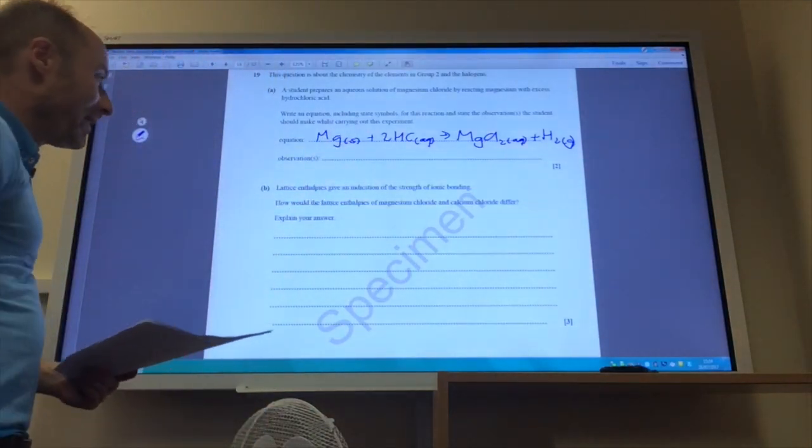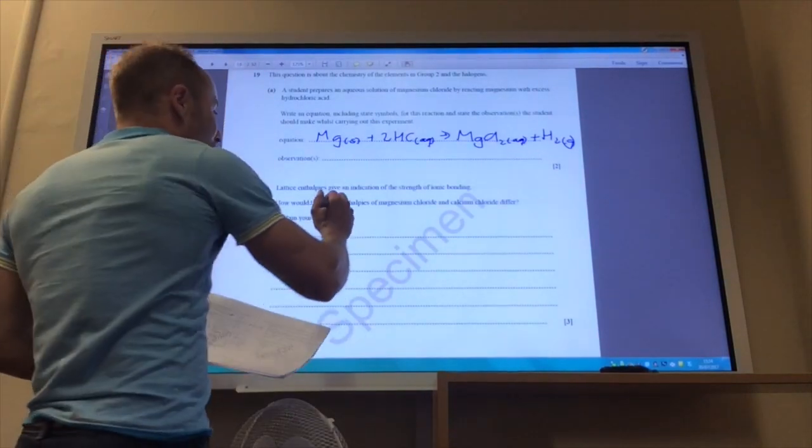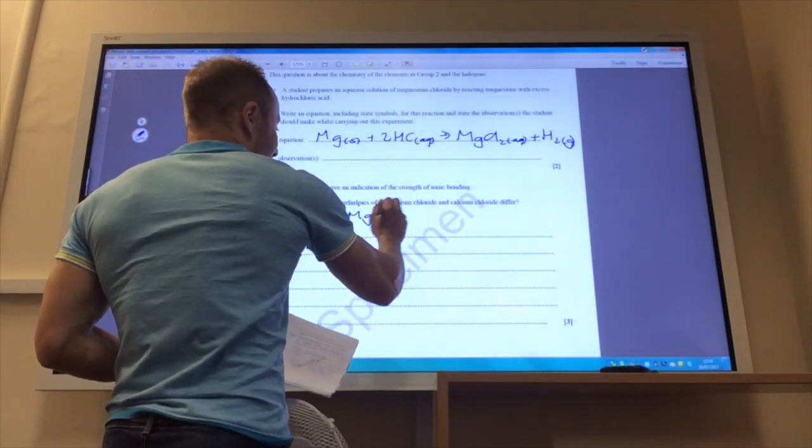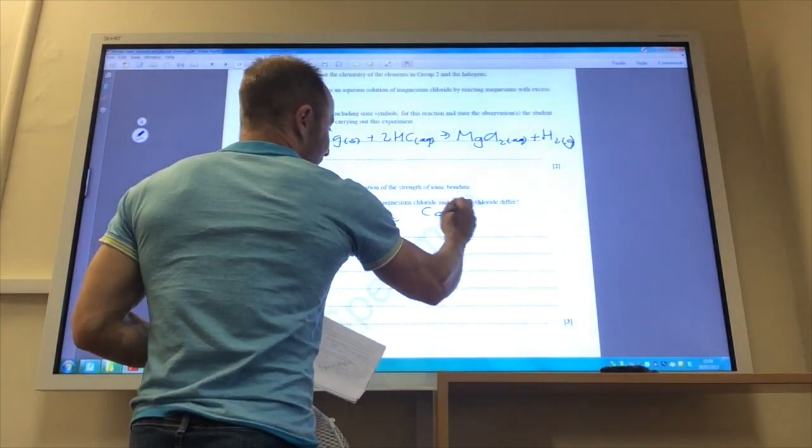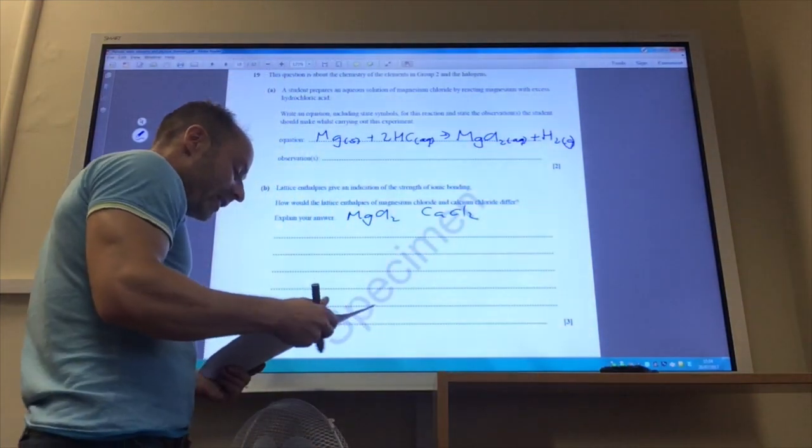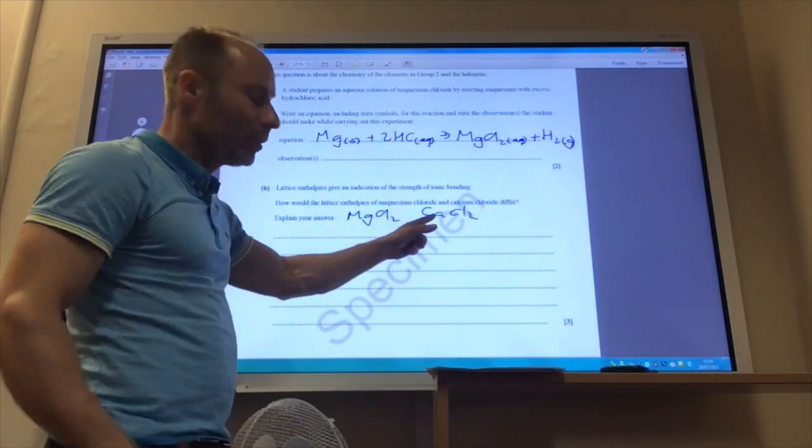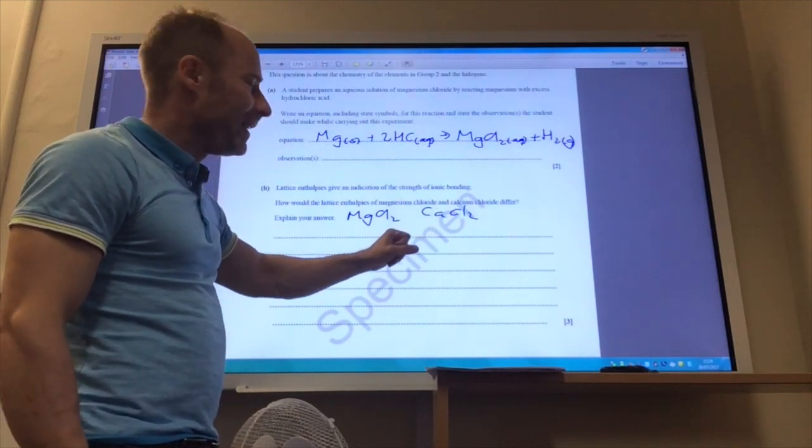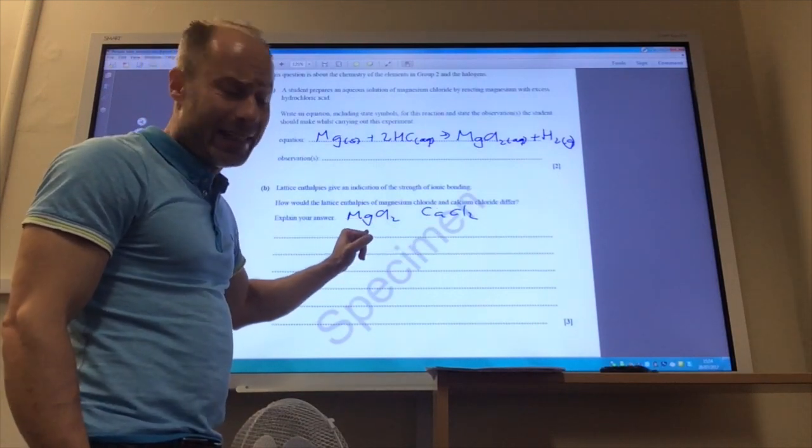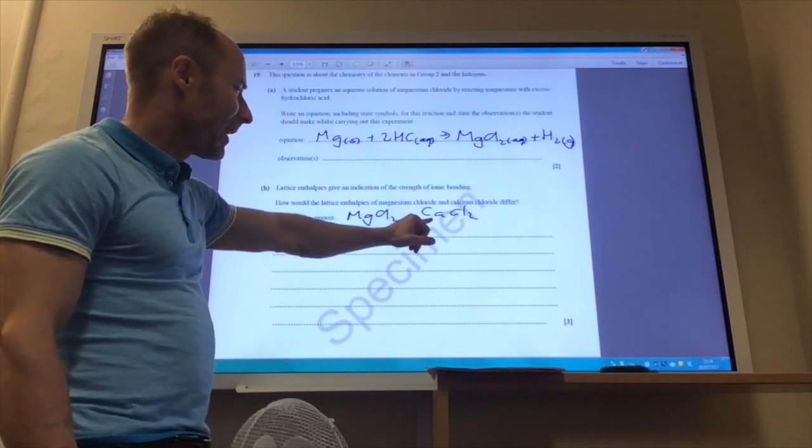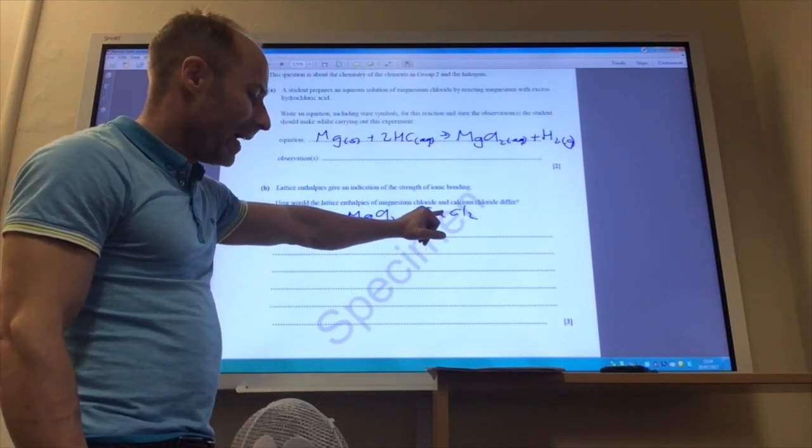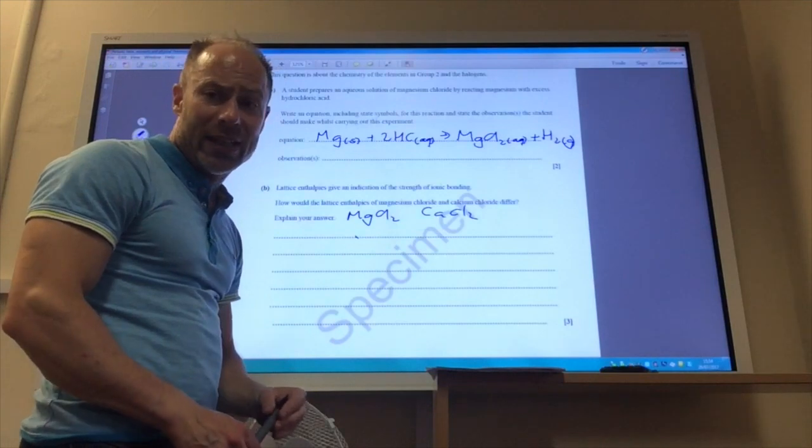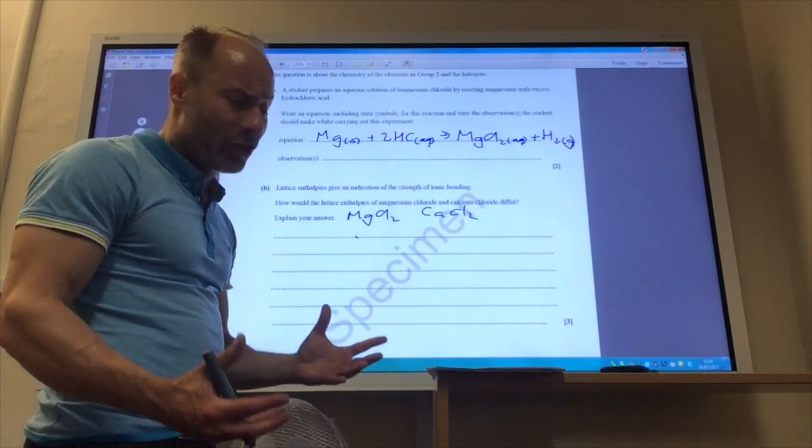How would the lattice enthalpy of magnesium chloride and calcium chloride differ? Well, magnesium chloride MgCl2, calcium chloride CaCl2, obviously the calcium ion, and it's really important to talk about an ion, the calcium ion is larger than the magnesium ion, and therefore the calcium ion will have a smaller charge density because it's larger.